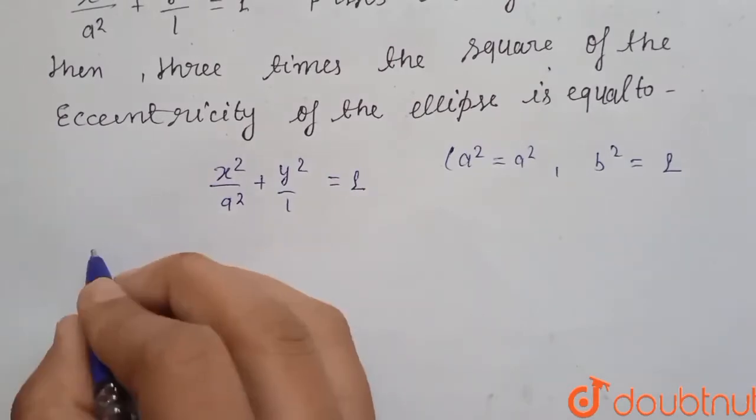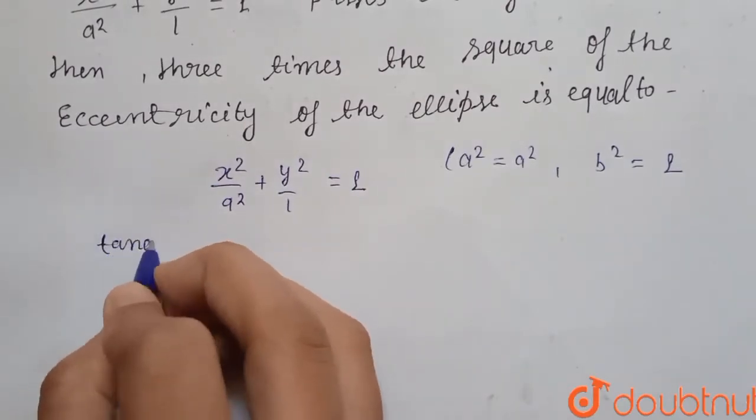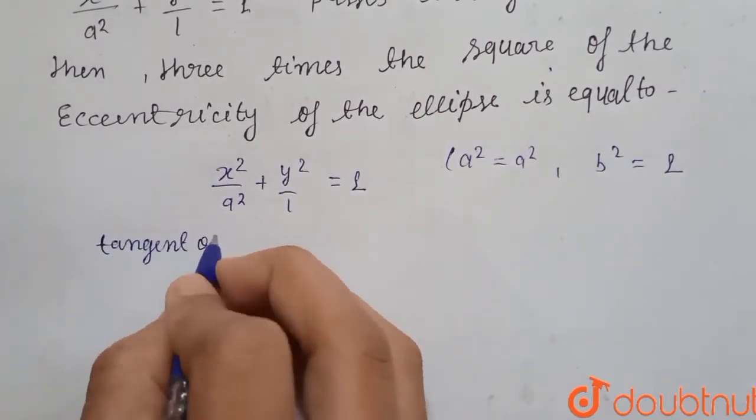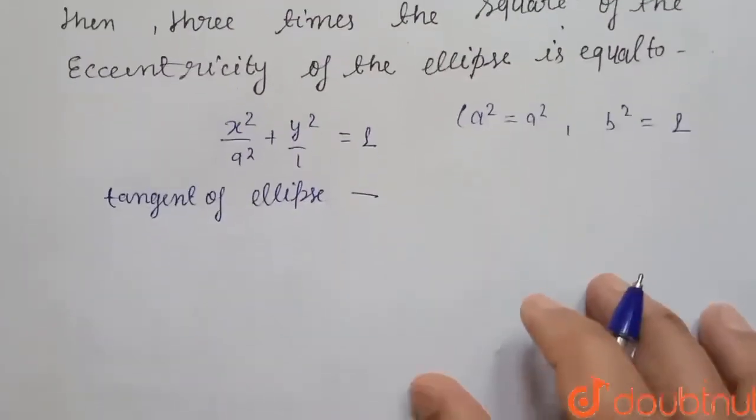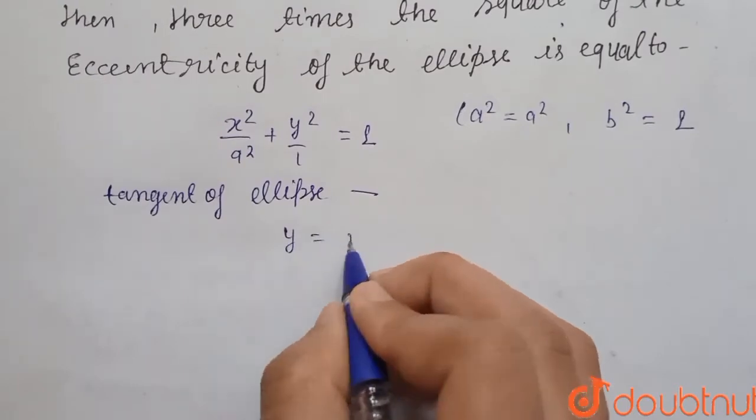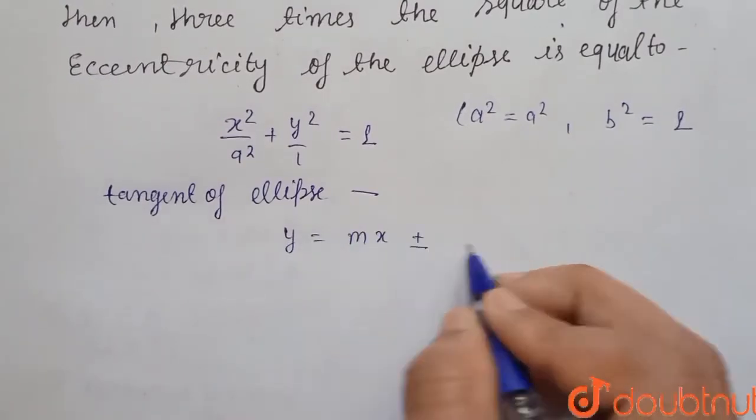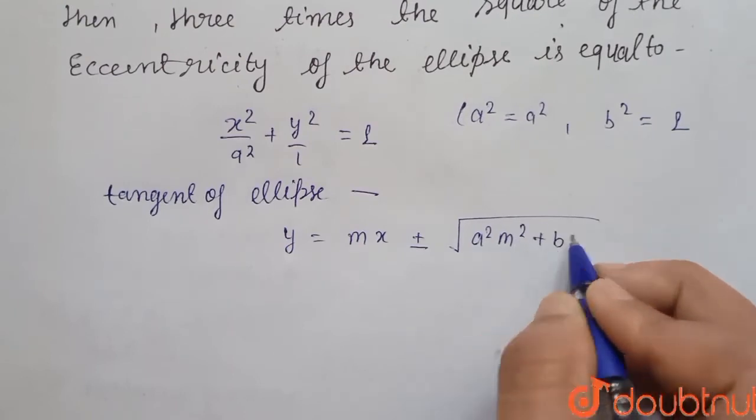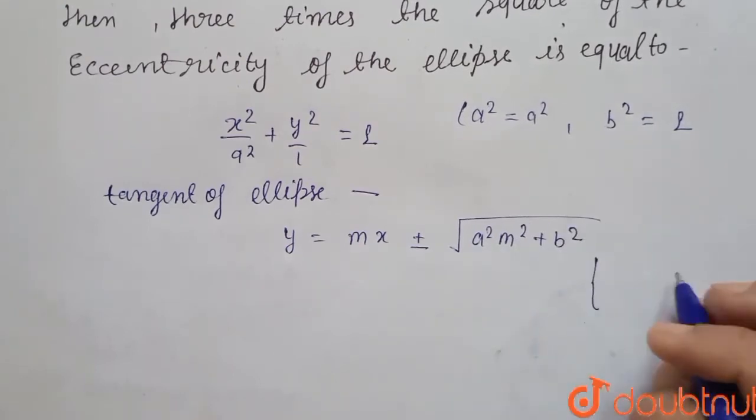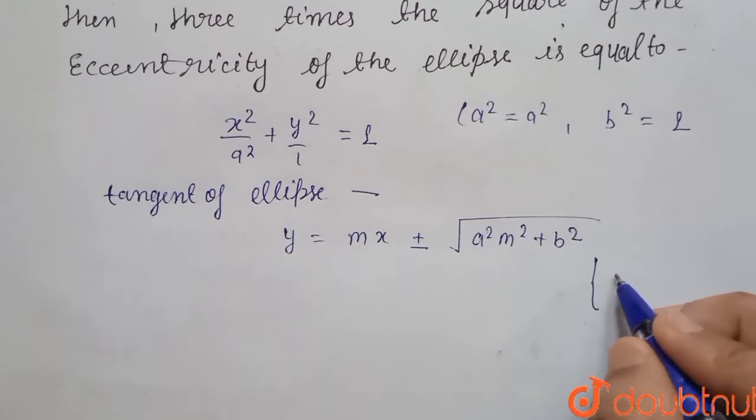We know that tangent of ellipse is y = mx ± √(a²m² + b²). And we have given in question that slope, that is m, is equal to 2.